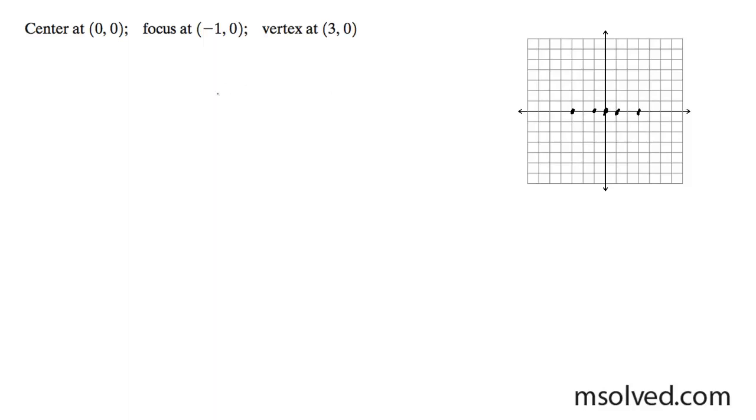So what we know here is to find the minor axis, we're going to use... so we know what a squared is. It's going to be 9 minus b squared equals our focus, which is just 1 squared, or 1.